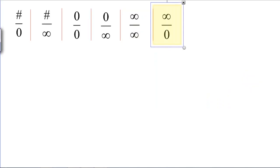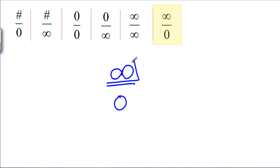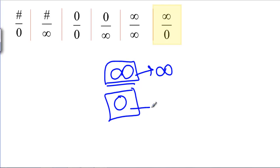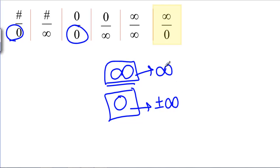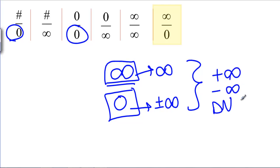What about infinity divided by zero? The infinity on top is obviously trying to make the answer infinity. But the zero on the bottom — when we divide by zero, we should get some kind of ±infinity. This is another example, like at a vertical asymptote, where our answer is going to be infinity, negative infinity, or does not exist, and it just depends on the signs.